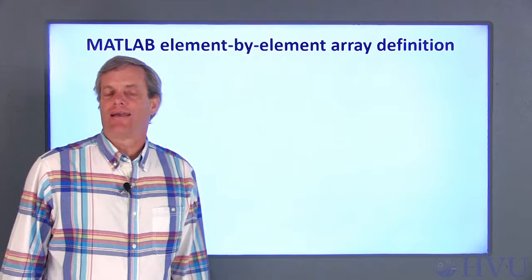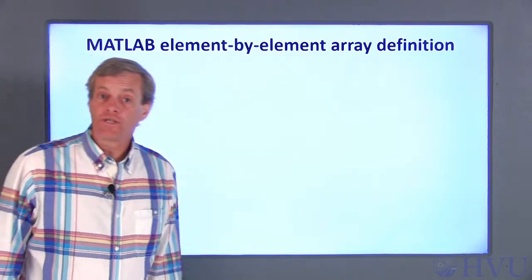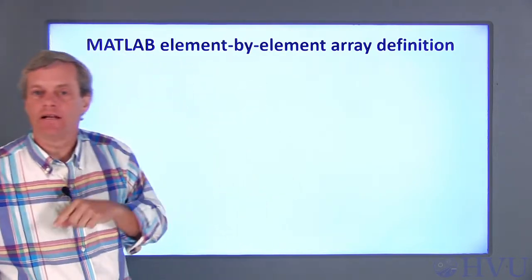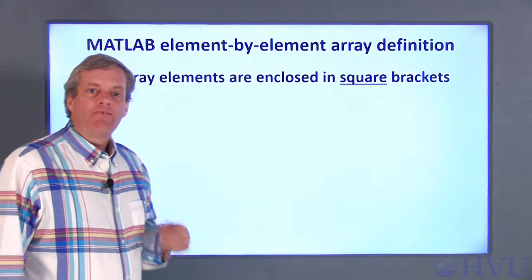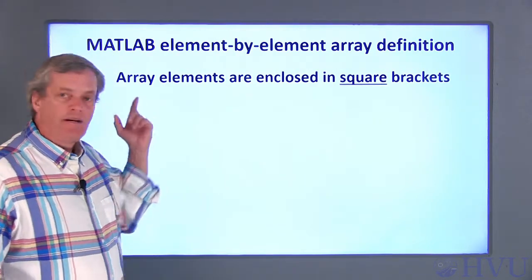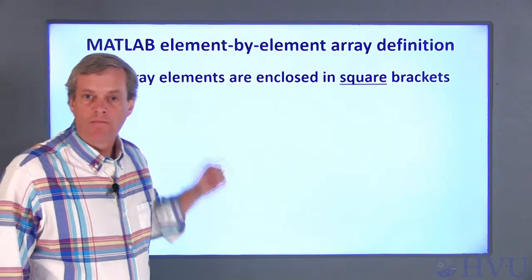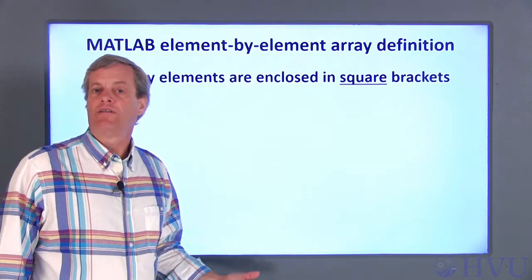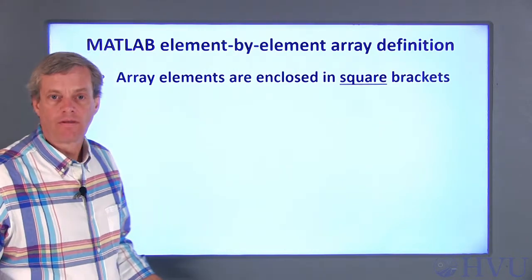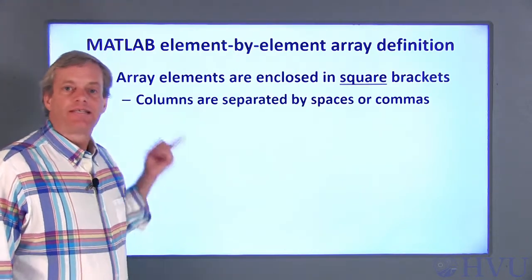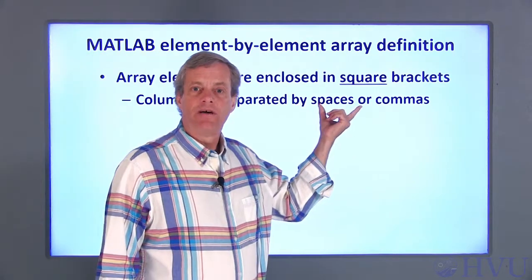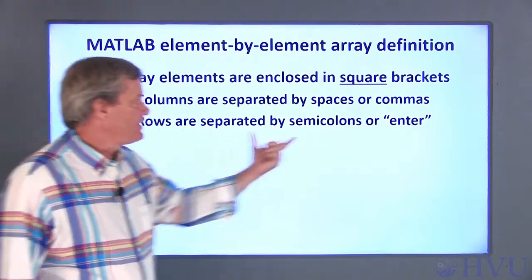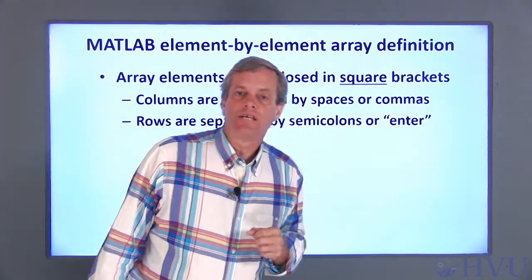Creating arrays in MATLAB can be done in a variety of ways. The first approach is to create the array by individually specifying every element. To specify that the values being typed are going to be an array, enclose the values in square brackets. By default, the first value you specify will be in the first row and first column of the array. Successive columns are separated by spaces or commas. Successive rows are separated by semicolons or the Enter key.